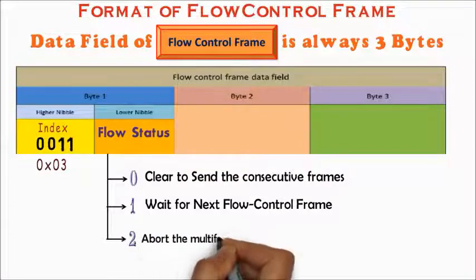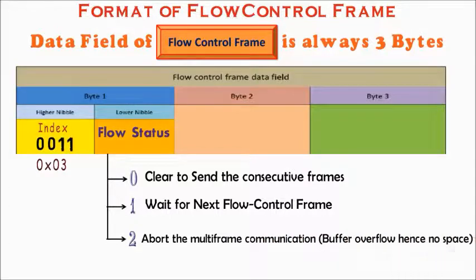And two represents overflow or abort. It means that the receiver buffer size is not sufficient to receive the NSDU. So not to send any consecutive frame and abort the multi-frame communication.